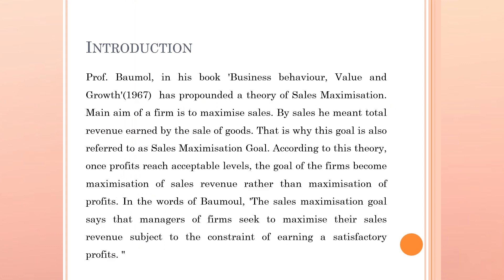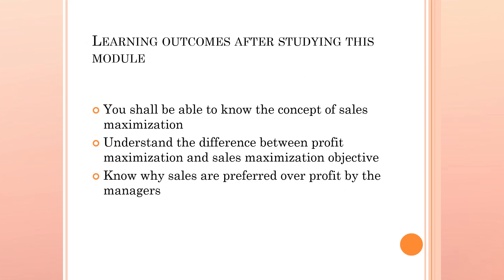That is why this goal is also referred to as the sales maximization goal. According to this theory, once profits reach acceptable levels, the goal of the firms becomes maximization of sales revenue rather than maximization of profits. In the words of Baumol, the sales maximization goal says that managers of firms seek to maximize their sales revenue subject to the constraint of earning a satisfactory profit. After studying this concept, we should understand the difference between profit maximization and sales maximization objective, and know why sales are preferred over profits by the managers.